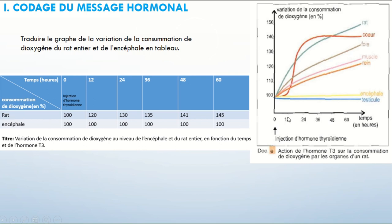Je vais extrapoler : par exemple, à l'heure 12, je mène une perpendiculaire à X et une autre à Y pour lire la valeur — je trouve que c'était presque 120 pour le rat. Pour l'encéphale, il n'y a pas de variation, donc tout au long des 60 heures, c'est 200. Et ainsi de suite, je remplis le tableau. Je n'oublie pas de mentionner l'injection de l'hormone thyroïdienne à T0. Je n'oublie surtout pas le titre, qui est Y en fonction de X : variation de la consommation de dioxygène au niveau de l'encéphale et du rat entier en fonction du temps et en fonction de l'hormone T3 injectée.